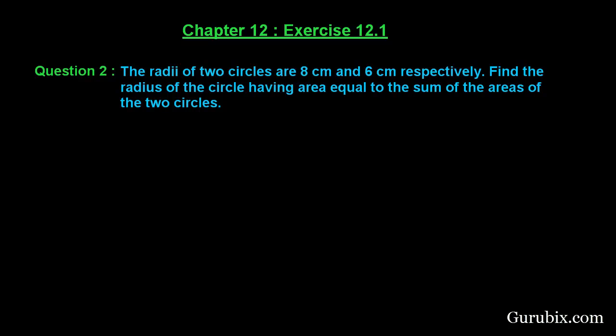Welcome friends, let us solve question number 2 of exercise 12.1 of chapter 12. The question says the radii of two circles are 8 cm and 6 cm respectively. Find the radius of the circle having area equal to the sum of the areas of the two circles.